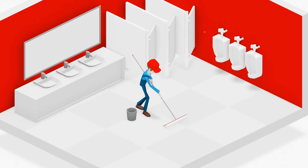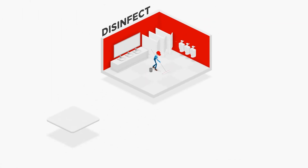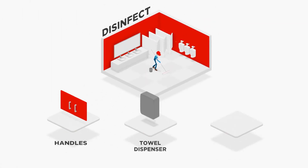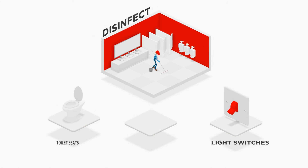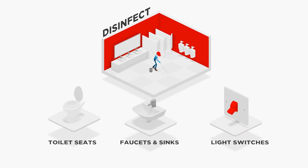But let's not forget the restroom. In this critical area, use disinfectant for things like handles, towel dispensers, light switches, toilet seats, faucets, sinks, and countertops.